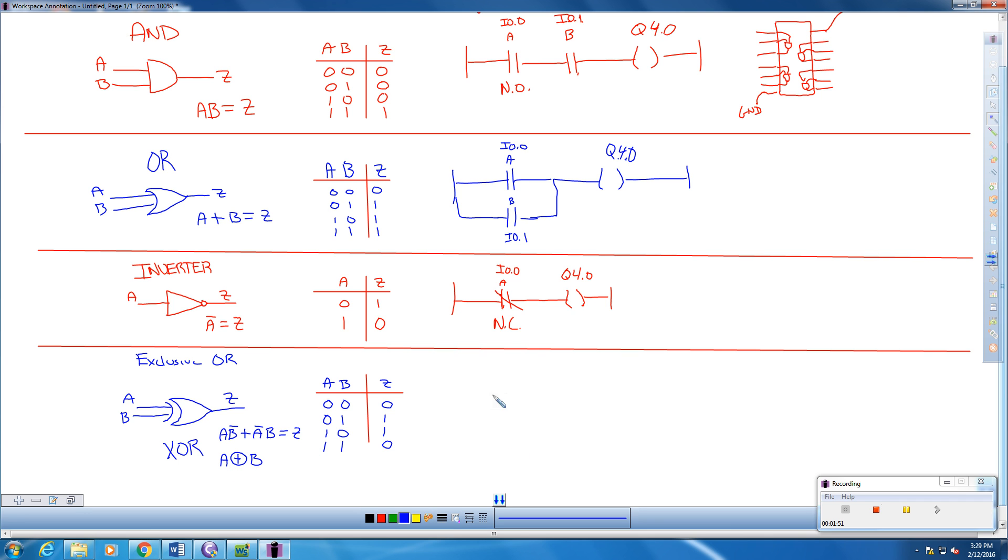So how does that show up over here in the ladder work of things? We have the OR part, so we know that we're going to have something in parallel. Remember, AND is in series, OR is in parallel. So when we draw this up, we're going to have a couple different scenarios here.